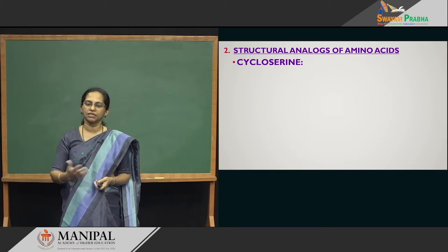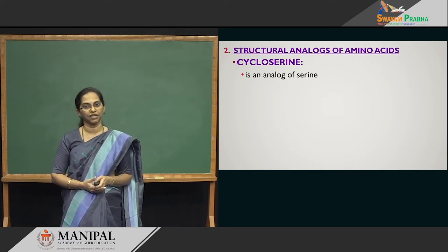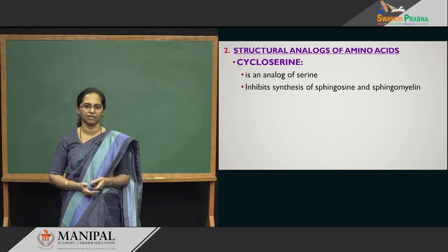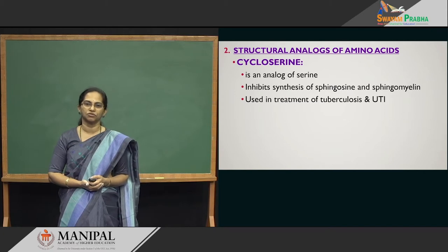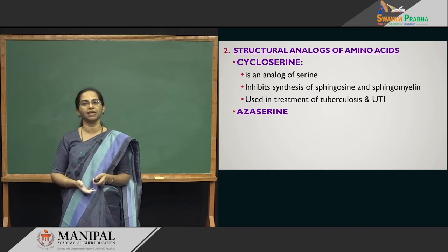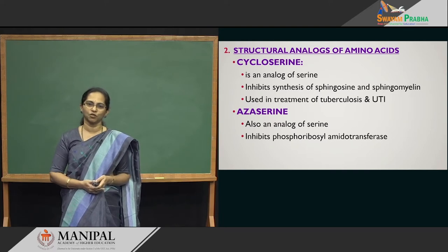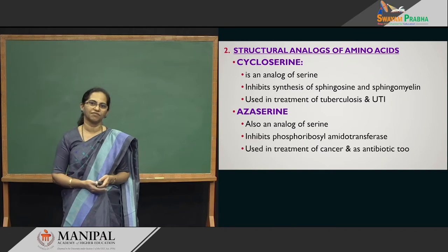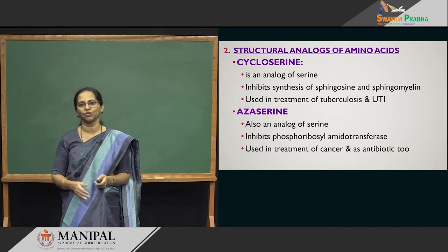Other drugs mimic amino acids. Cycloserine is an analogue of serine; it stops the synthesis of sphingosine and sphingomyelin, and is used to treat tuberculosis and urinary tract infections (UTI). Azaserine is also an analogue of serine; it inhibits the enzyme phosphoribosyl amidotransferase and is a good anti-cancer agent — cells cannot divide, so you are curing cancer.